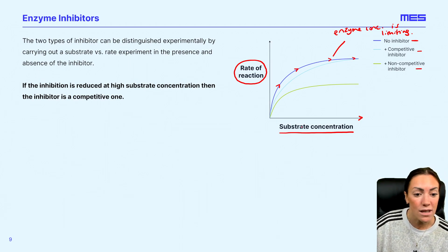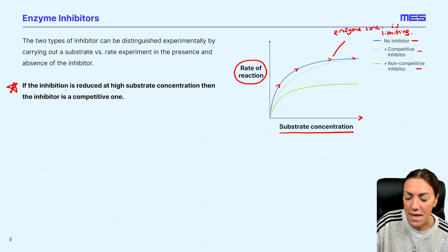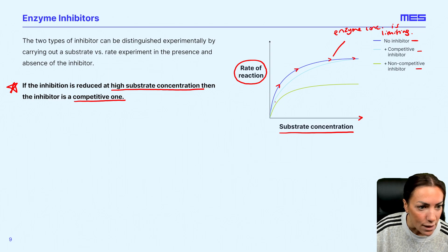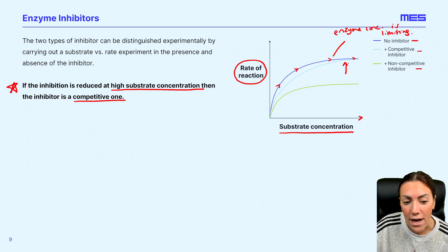Now let's look at the inhibitors. The competitive inhibitor is the light blue line. If the inhibition is reduced at high substrate concentration, then the inhibitor is a competitive one. We can see on the light blue line that as we increase the substrate concentration, the rate of reaction is reduced, but at very high substrate concentrations, the rate of reaction is no longer reduced.